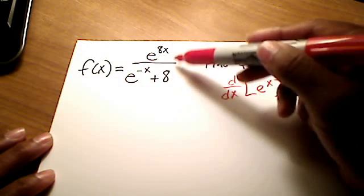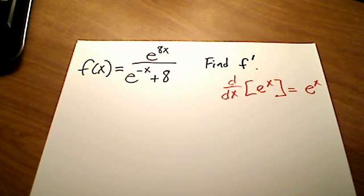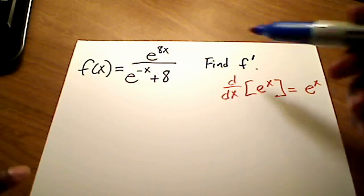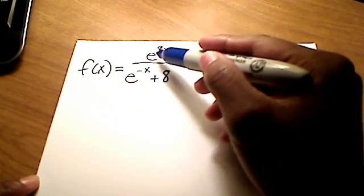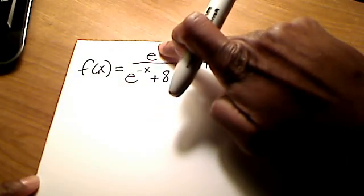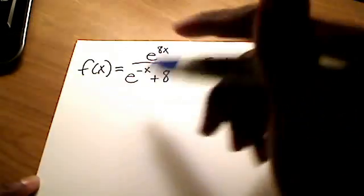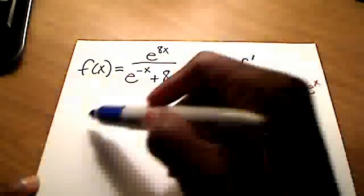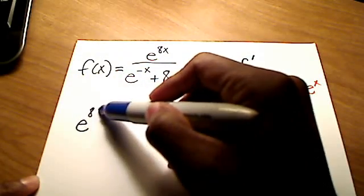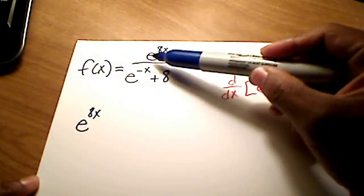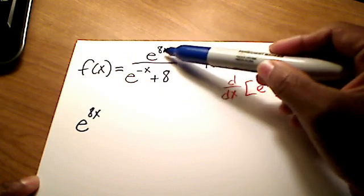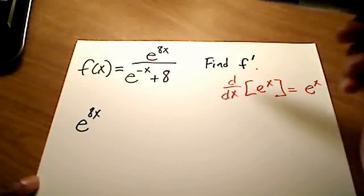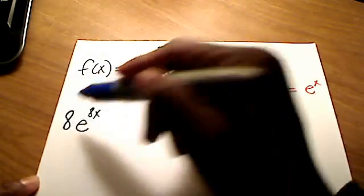So keep that in mind as we take the derivative of this quotient over here. The quotient rule says, give me the derivative of the numerator. I'm going to use the chain rule on this. The chain rule says, give me the derivative of e to some stuff, which is just e to that stuff. That's the derivative of the outer. Now give me the derivative of the inner, which is just the exponent. The derivative of 8x is simply just an 8. So I'll put that out front.